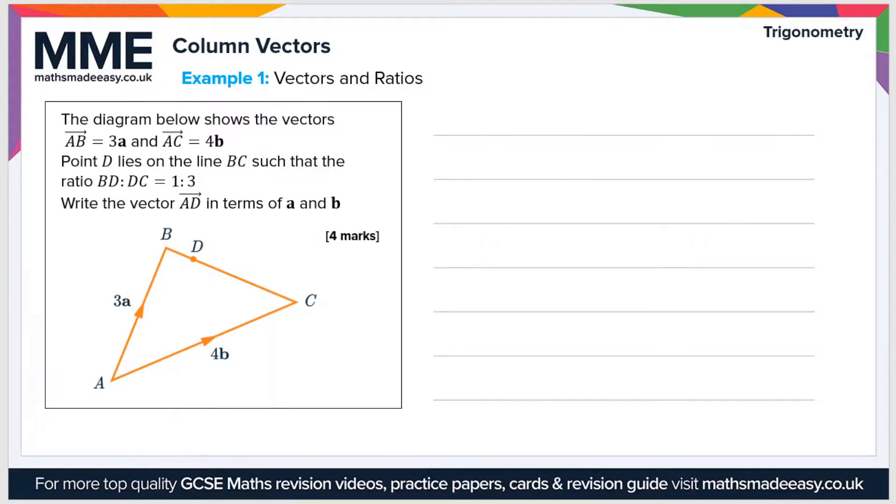This is an example question involving vectors and ratios. The diagram shows the vectors AB which is 3a and AC which is 4b. Point D lies on the line BC such that the ratio of BD to DC is equal to 1 to 3.